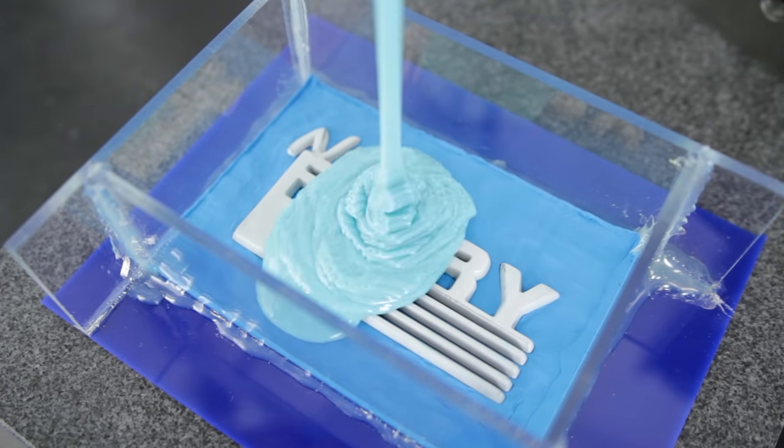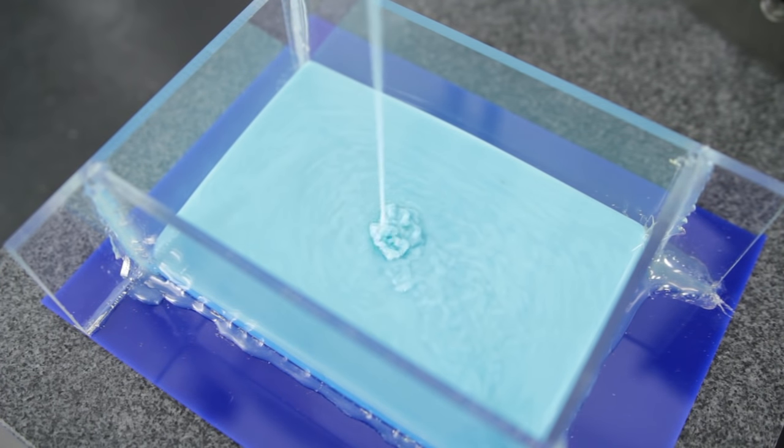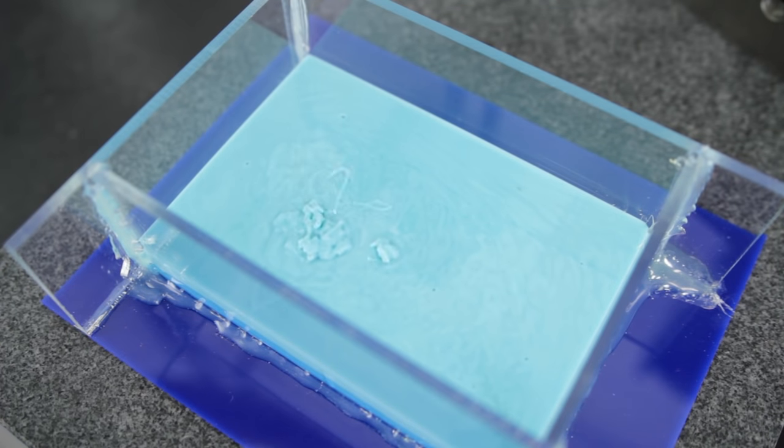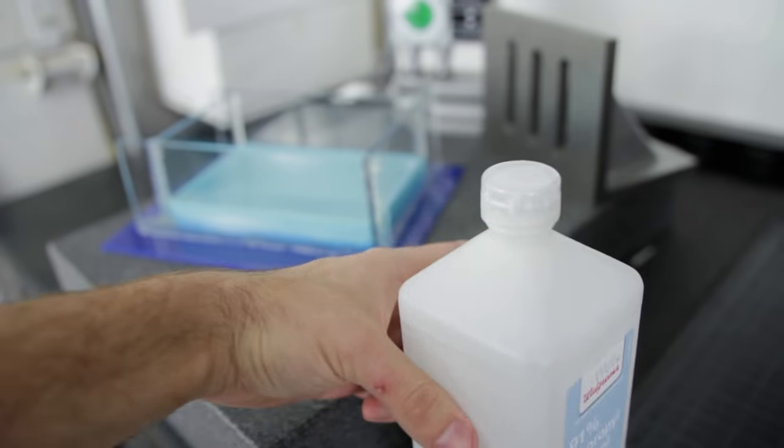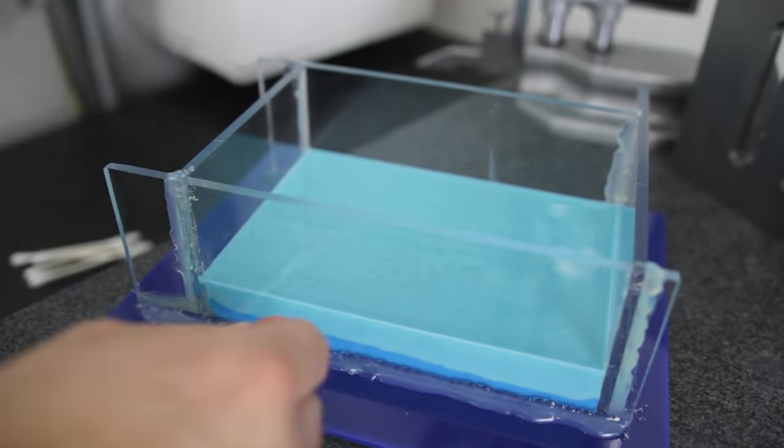I then pour the silicone into a mold box with my friend Nick Ferry's 3D printed logo that I made for him. After I pour the silicone, I wait for it to cure. I use 91% rubbing alcohol to release the hot glue surrounding my mold box.